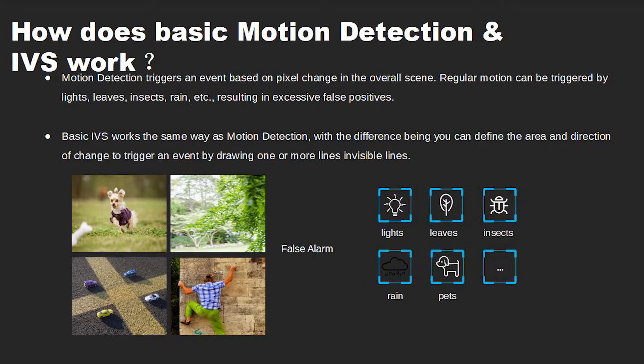Motion detection triggers an event based on pixel change in the overall scene. Regular motion can be triggered by lights, leaves, insects, rain, etc., resulting in excessive false alerts.